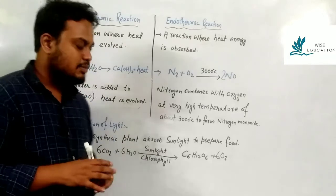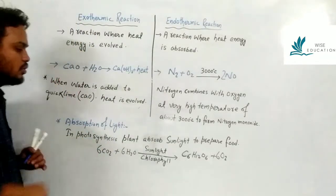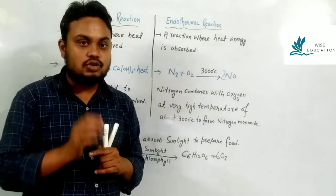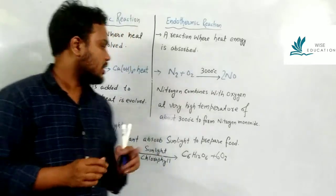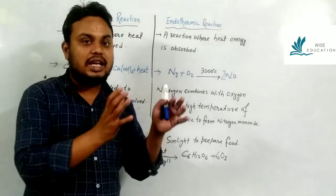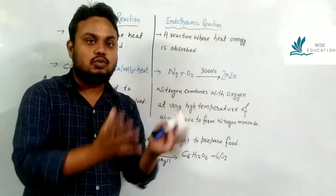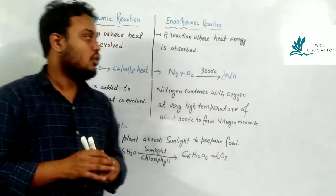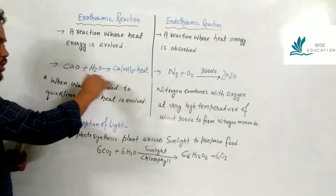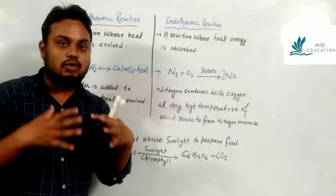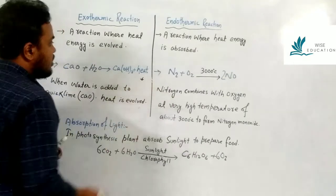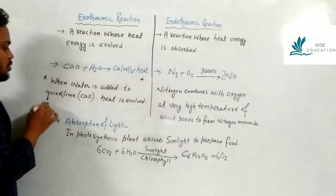An example of exothermic reactions: calcium oxide, which is quick lime, when it reacts with water forms calcium hydroxide and releases a huge amount of heat energy. Since heat is released, these reactions are called exothermic reactions.